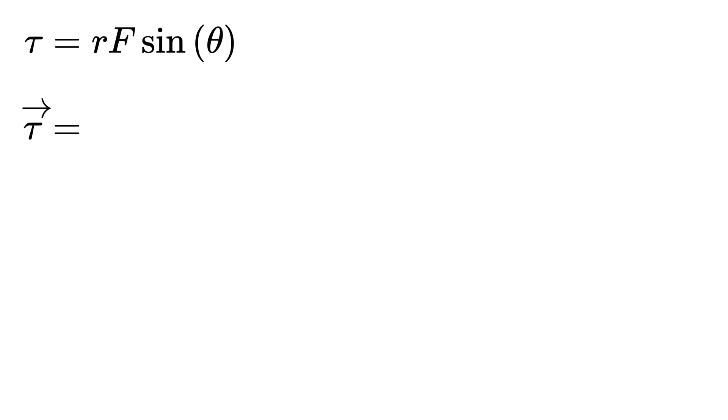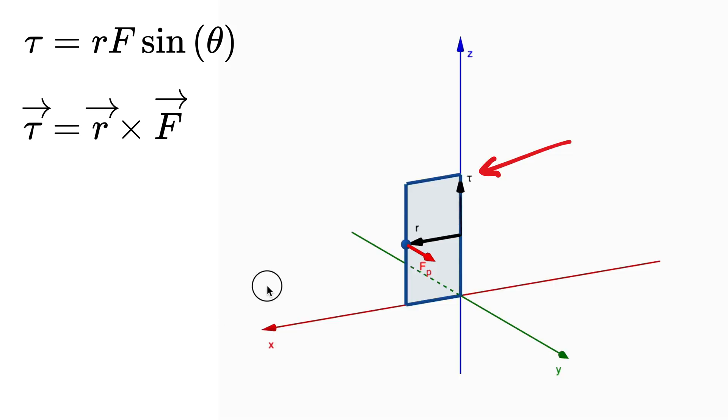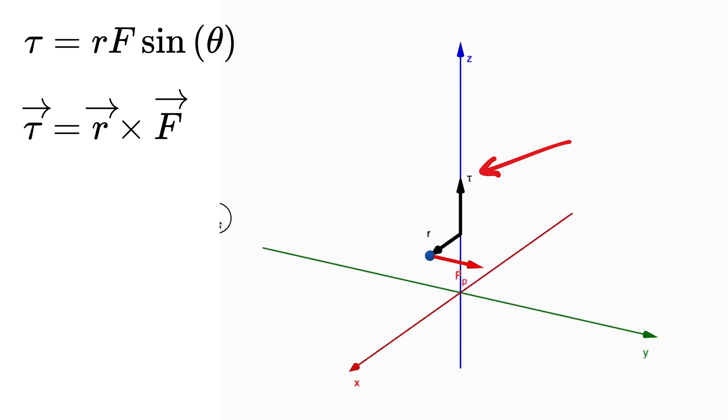In vector form, torque equals position vector R cross F, that is vector cross product between position vector and the force. Therefore, the direction of the torque vector is not in the plane of rotation, but is actually perpendicular to it.